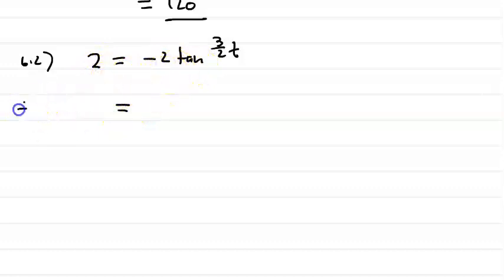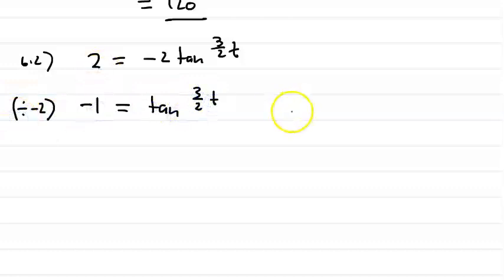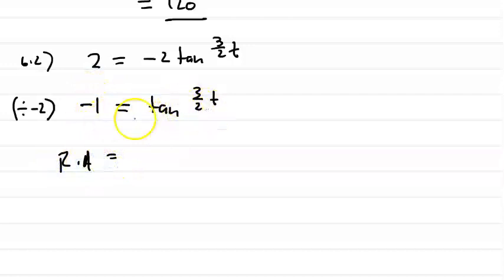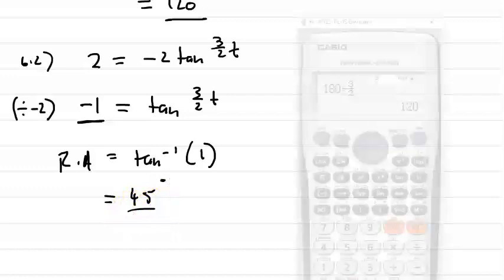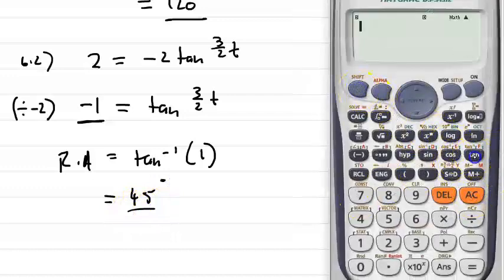Our next step is to work out the reference angle. We have tan(3/2·t) equals minus 1. So the reference angle equals tan inverse of 1 — the positive of this value. That's a special angle equal to 45 degrees. We can double check: shift, tan, 1 gives 45 degrees.